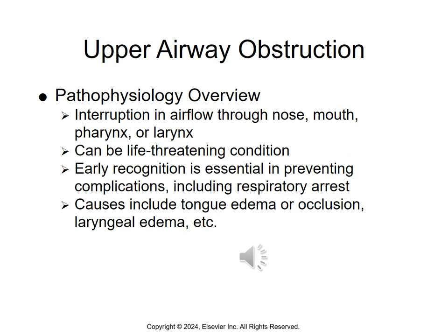We'll begin with upper airway obstruction, a little bit of pathophysiology review. This is an interruption in airflow through the nose, mouth, pharynx, or larynx. This absolutely can be a life-threatening condition; therefore, early recognition is essential in improving complications, which can include respiratory arrest.